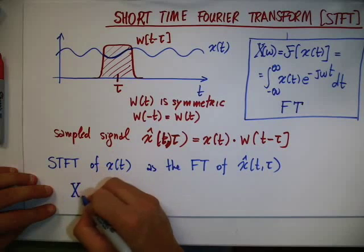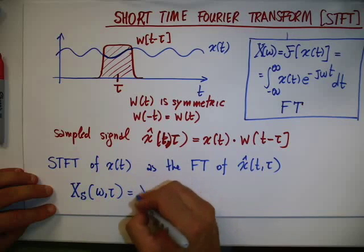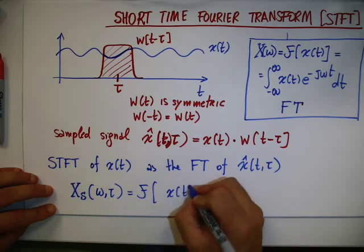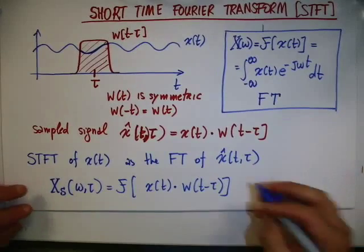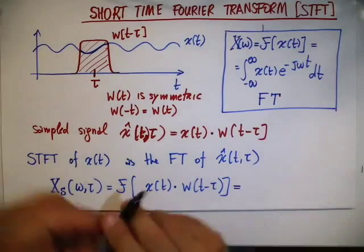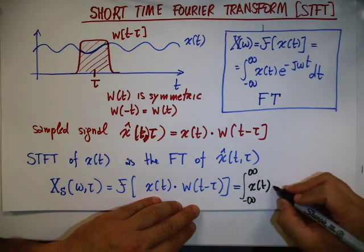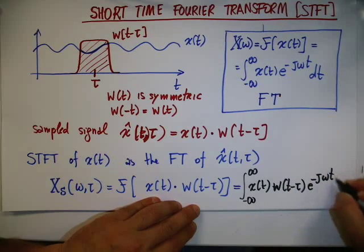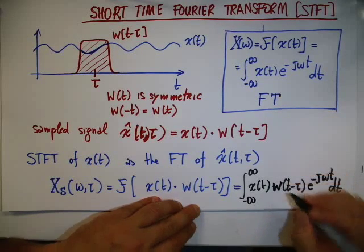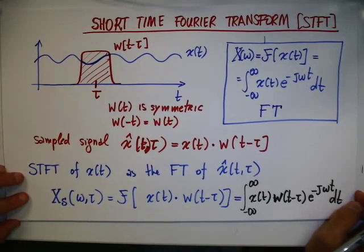Then we define the short-time Fourier transform of x of t as the Fourier transform of this windowed signal. So we have that X_s, which is a function of omega and tau, is equal to the Fourier transform of x of t times w of t minus tau — or written as an integral, the integral between minus infinity and infinity of x of t, w of t minus tau, e to the minus j omega t dt. This is the definition of the short-time Fourier transform.